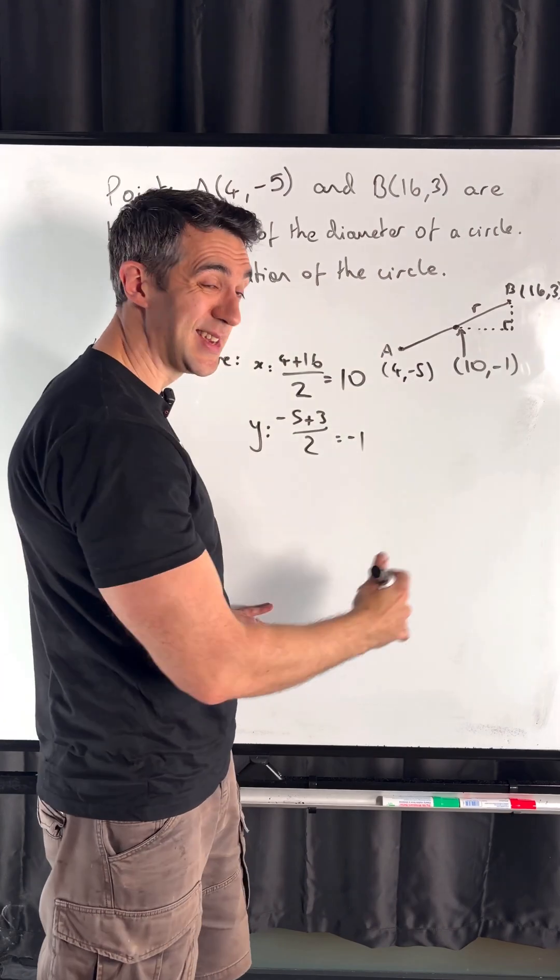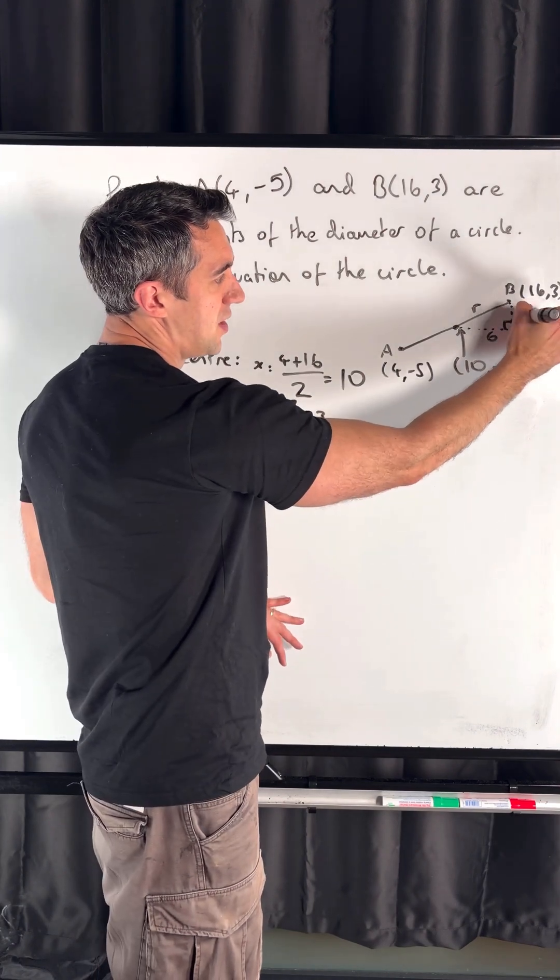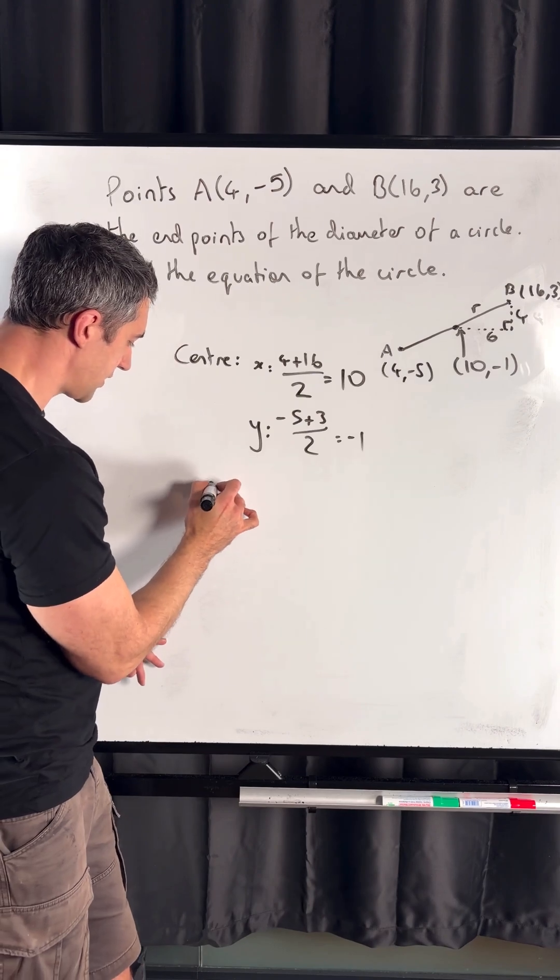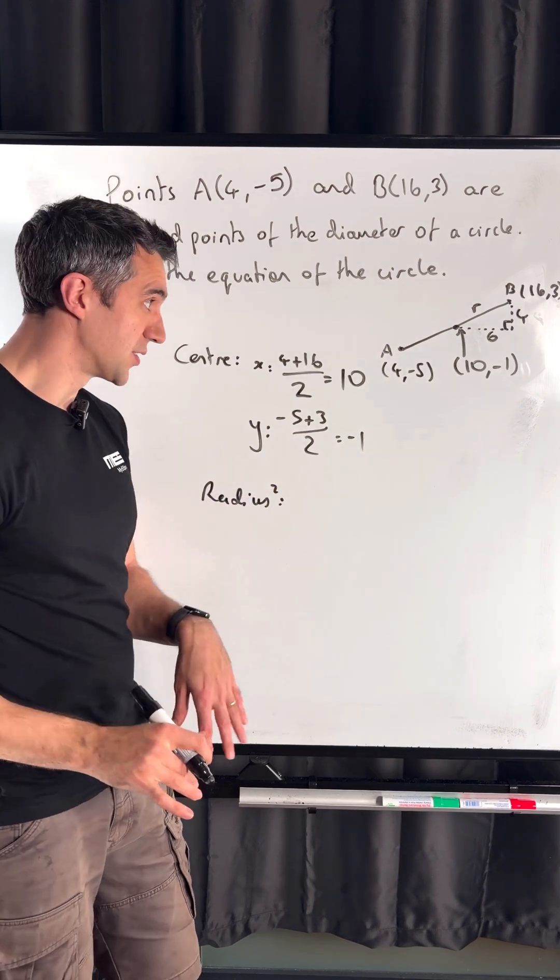From 10 to 16 is a difference of 6, and from -1 to 3 is a difference of 4. For our equation, we need radius squared, not the radius itself.